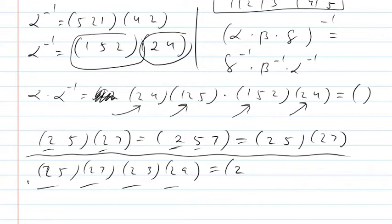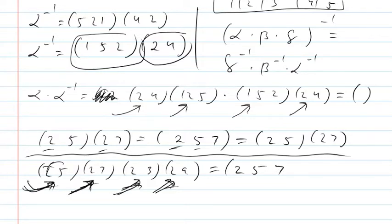Put 2 in, it becomes 5; 5 stays 5 through the remaining cycles. Put 5 in, it becomes 2; 2 becomes 7; 7 stays 7. Put 7 in, it stays 7 until it becomes 2; 2 becomes 3; 3 stays 3. Put 3 in, it stays 3, becomes 2; 2 becomes 9; 9 stays 9, becomes 2.